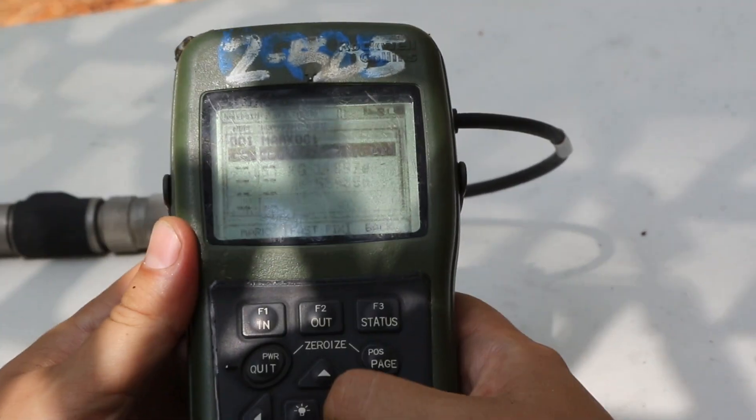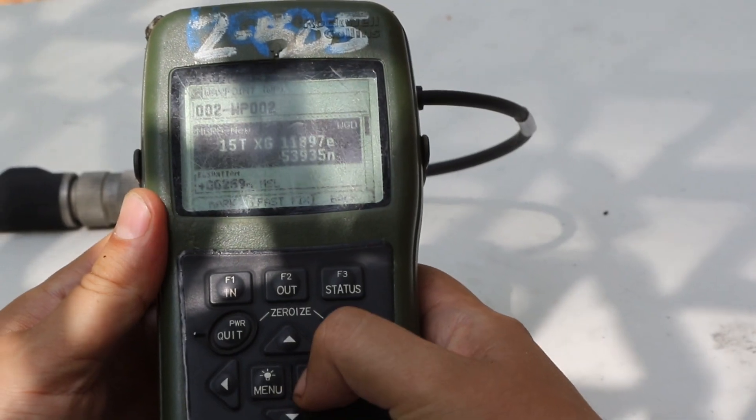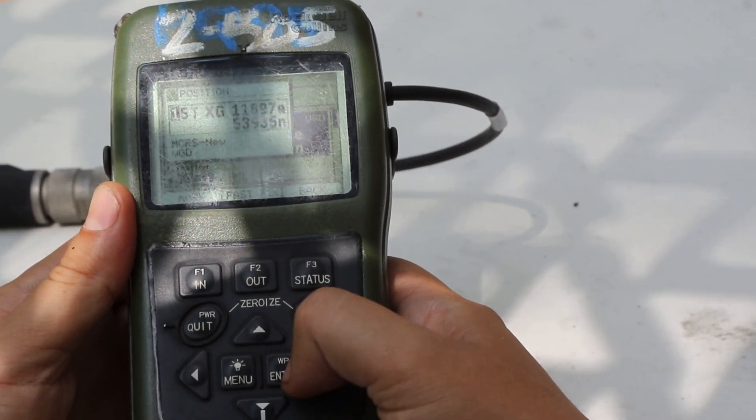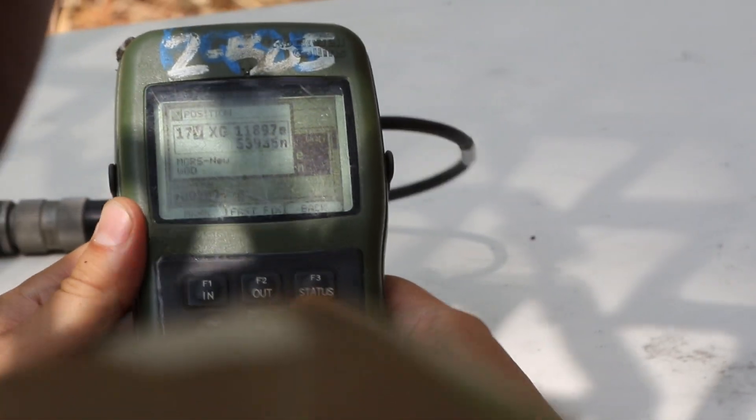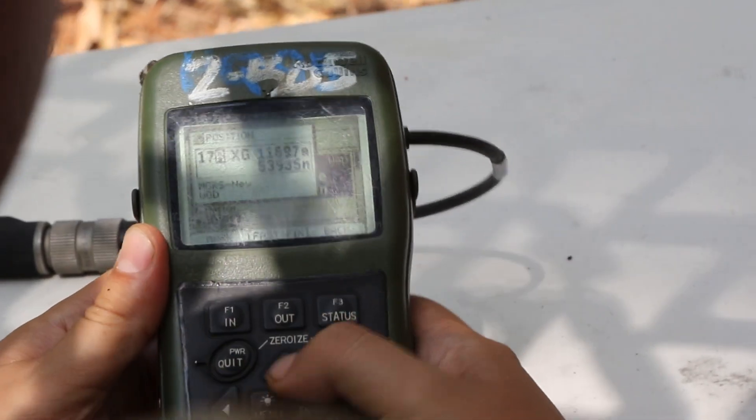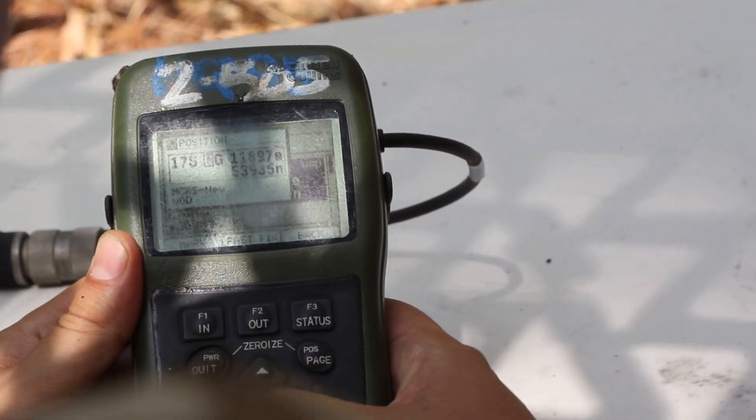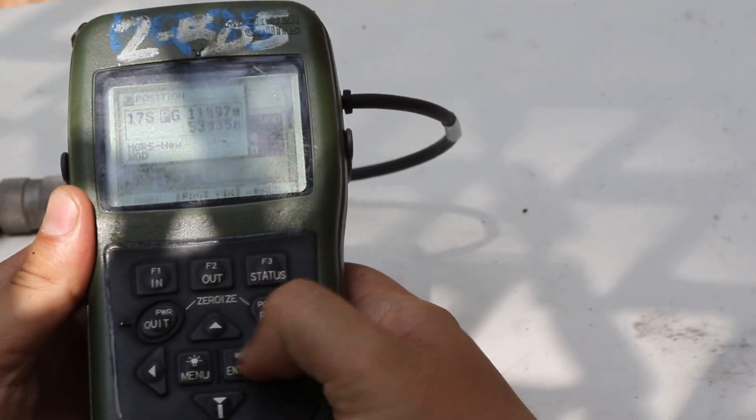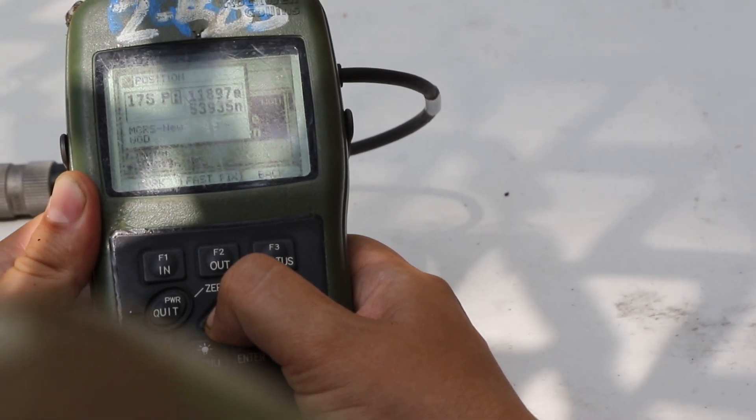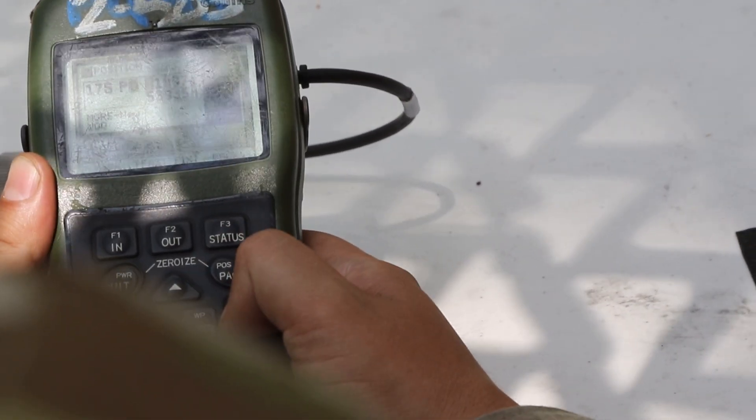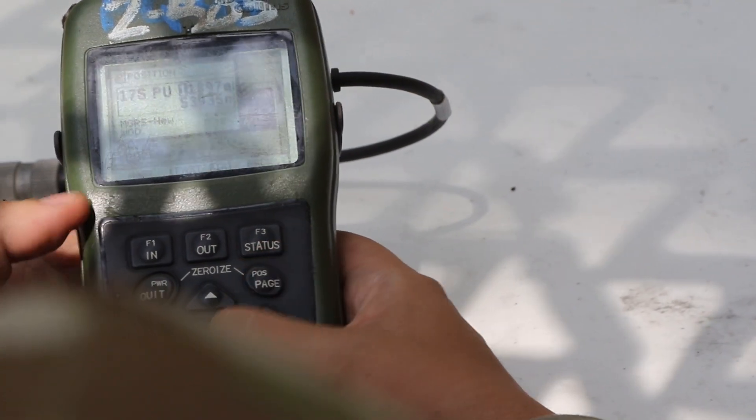Point 2, select. I'm going to come down, enter. 1, 7, Sierra, Papa, Uniform, 7.